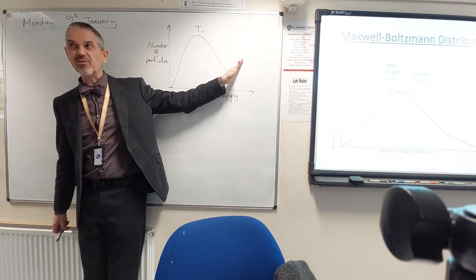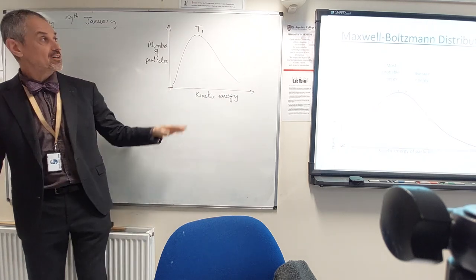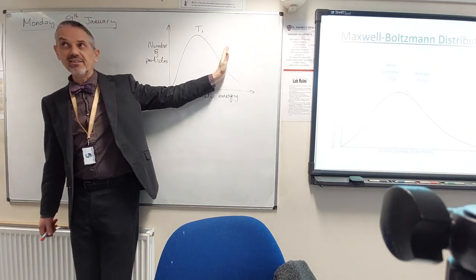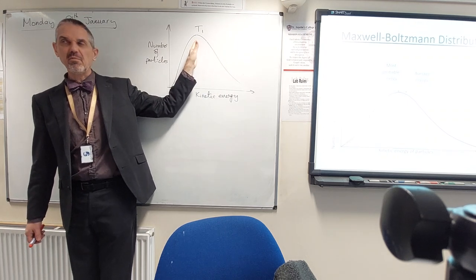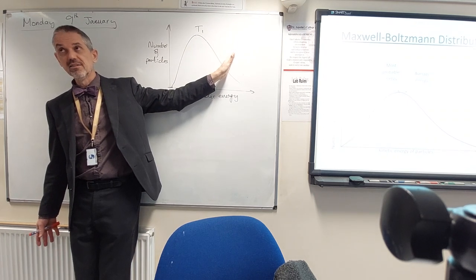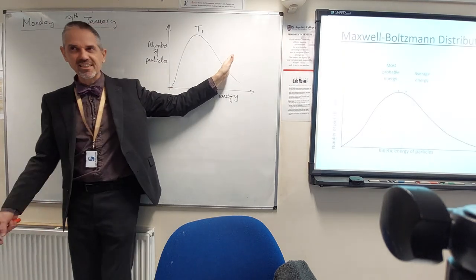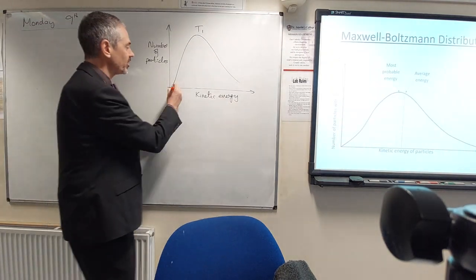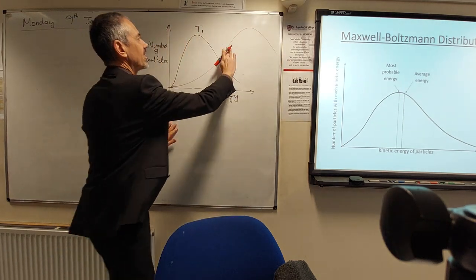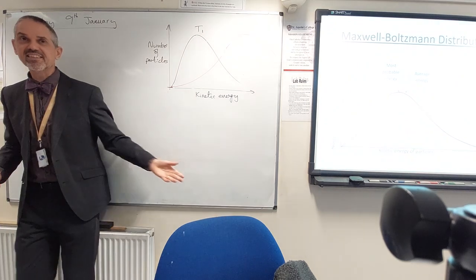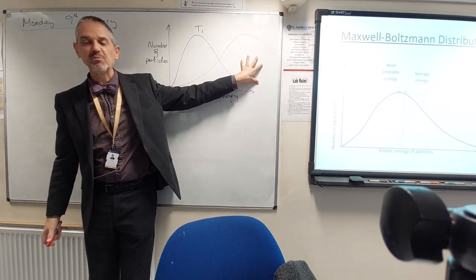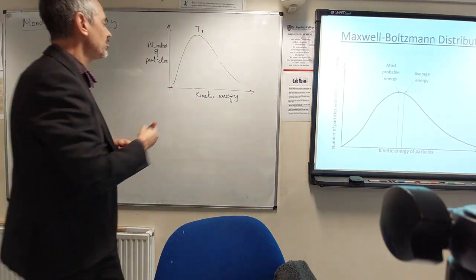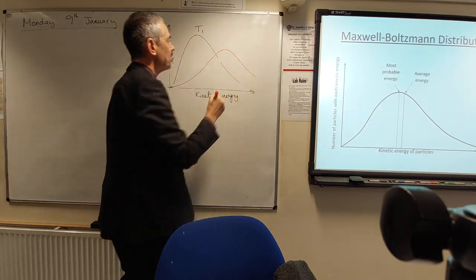It'll have a higher average energy, like an easier test having a higher average mark score. So if my average is around about here and then moves to the right as we heat the gas up, the bump — the top of the bump — will move to the right. But because we've got the same number of particles, the bump can't be the same height. If the bump stayed the same height and moved over, the area under the curve would be much larger. The number of particles is the same, so the area under the curve has to be the same — which means as the bump moves to the right, it must be visibly lower.